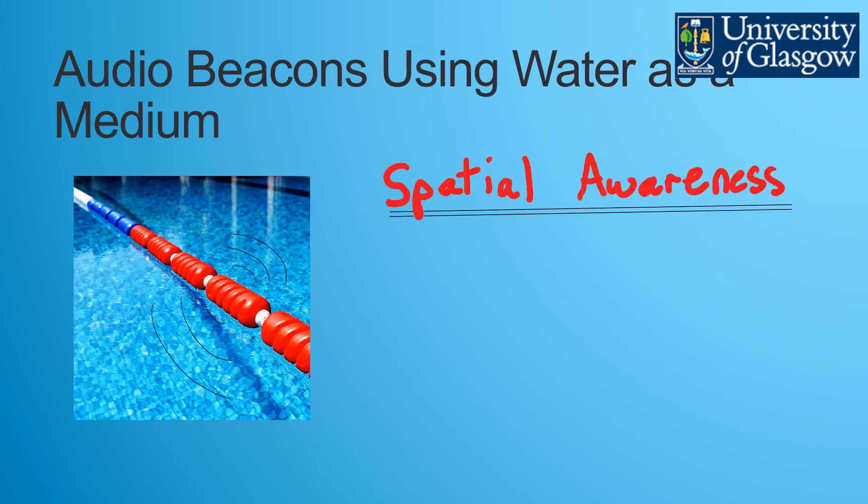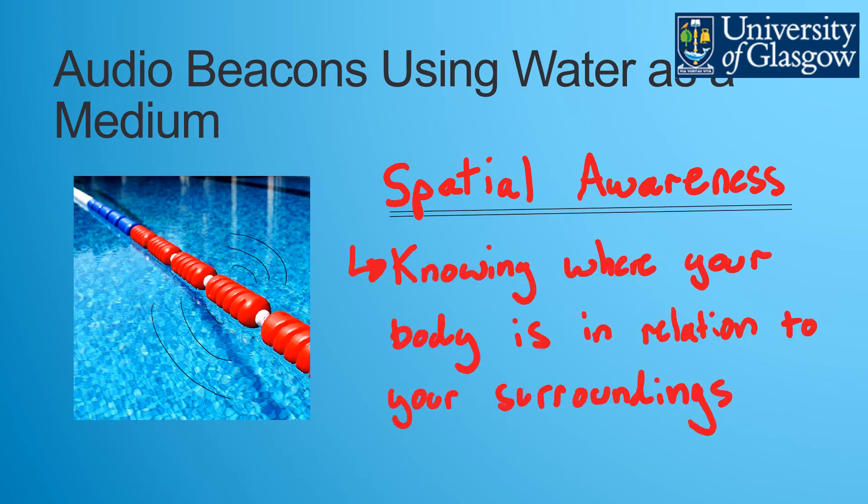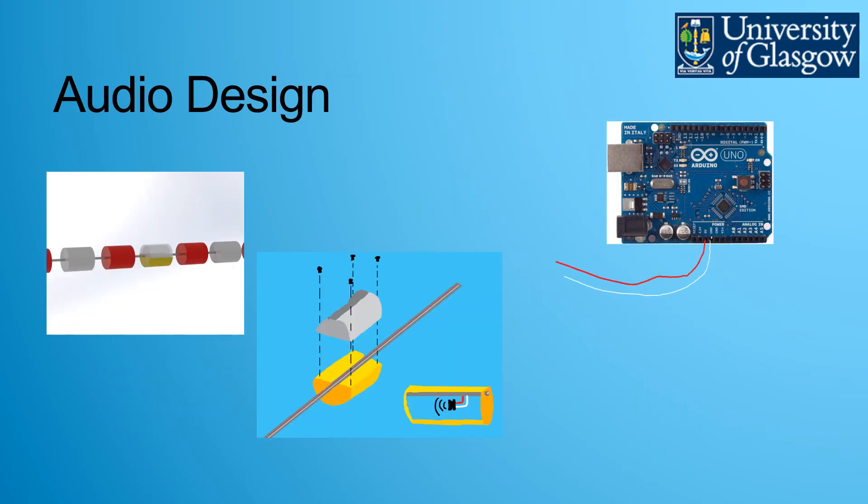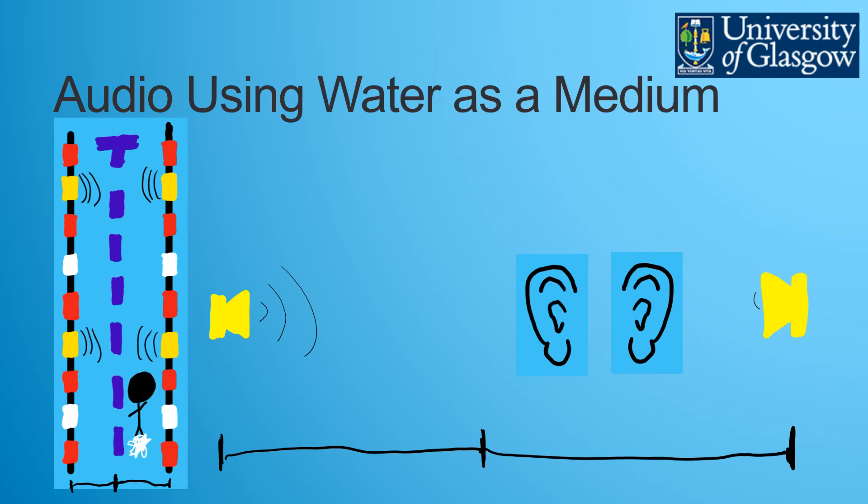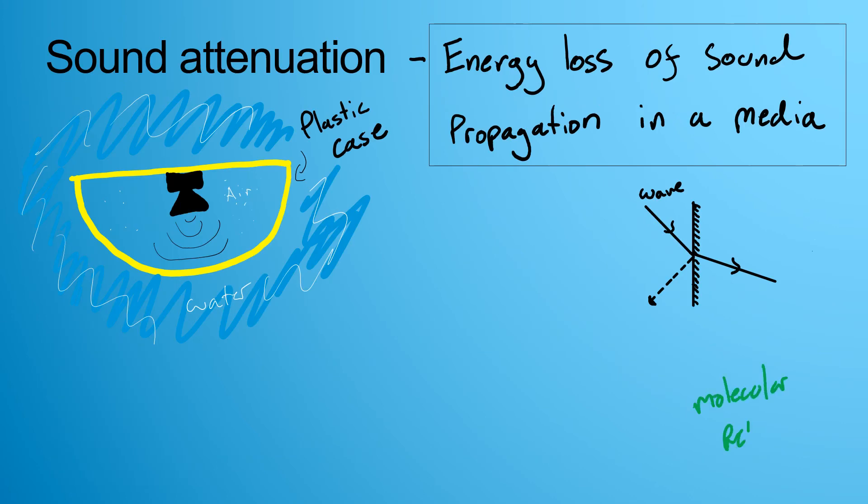My second idea was to create beacons on the lane ropes that emit sound and give spatial awareness to swimmers. Lane ropes are already present so it would be nice to modify them in some way. My thought process was to have Arduinos that are connected to a power line that have speaker notes attached to them. It's similar to that of surround sound. You'd be able to work out where you are just by listening to the sounds around you.